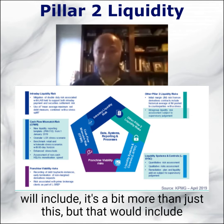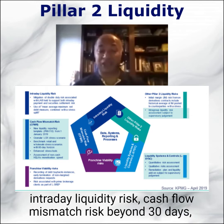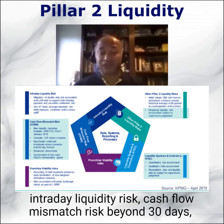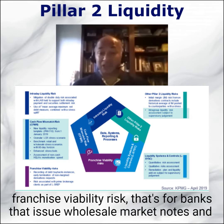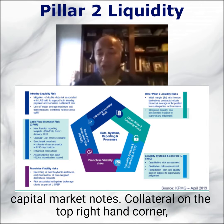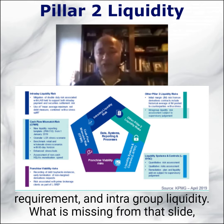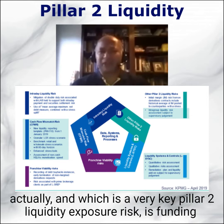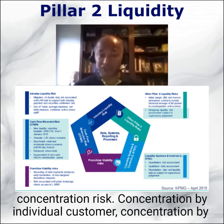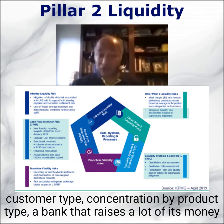That would include — and it's a bit more than just this — intraday liquidity, cash flow mismatch risk beyond 30 days, franchise viability (that's for banks that issue wholesale or capital market notes), collateral in the top right-hand corner. Other Pillar 2 liquidity items are initial margin, which is a collateral funding requirement, and intra-group liquidity. What's missing from that slide, which is a very key Pillar 2 liquidity exposure, is concentration risk — concentration by individual customer, by customer type, and by product type.